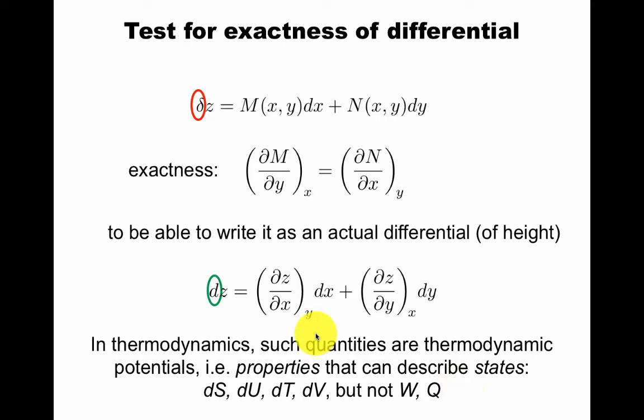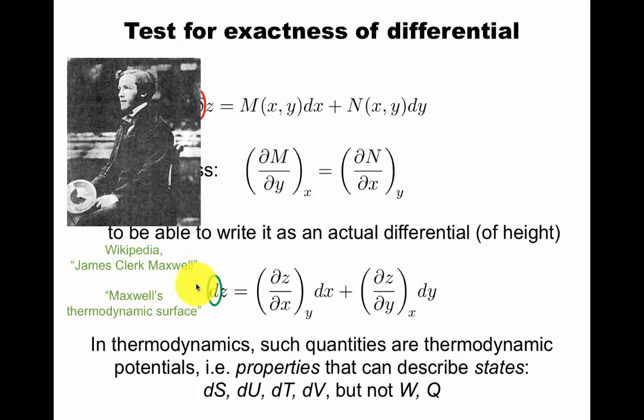In thermodynamics, typical things that are not properties are work and heat. They're not properties like entropy, internal energy, temperature, and volume. And this is, of course, all due to Maxwell. Maxwell himself made a little plaster model of thermodynamic properties where you can actually draw them as a surface.